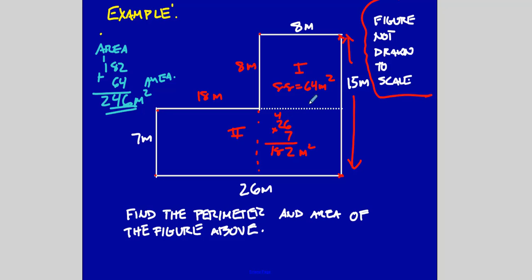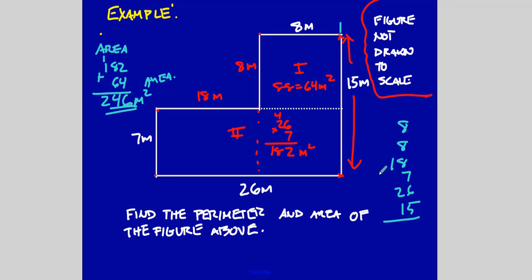Now for the perimeter, I'm just going to go around the figure. Starting here: 8 plus 8 plus 18 plus 7 plus 26 plus 15. Adding those up gives a perimeter of 82 meters.